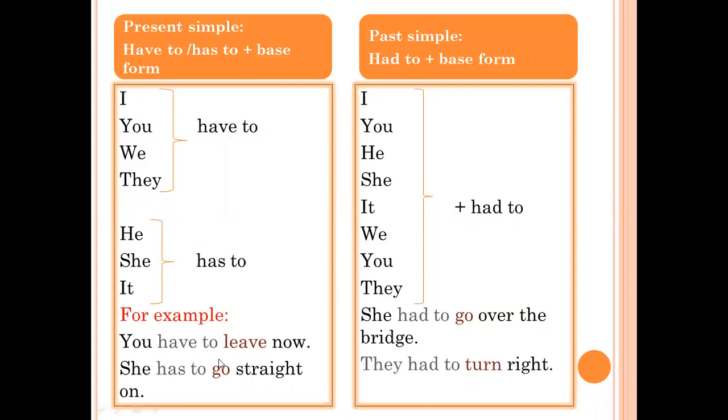She has to go straight on. So after has to, the verb go comes in the base form.